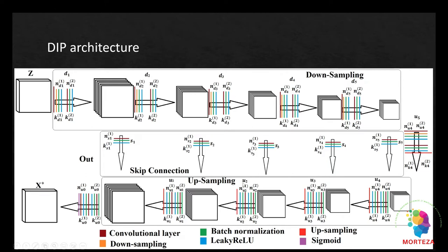So this is the architecture, downsampling, upsampling, skip connections, and all sorts of convolution. Also, as you can see, we're using leaky ReLU activation function instead of ReLU.